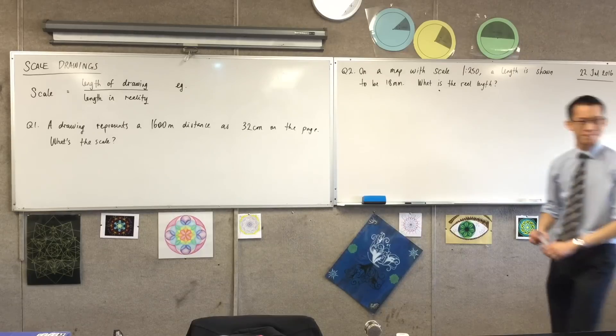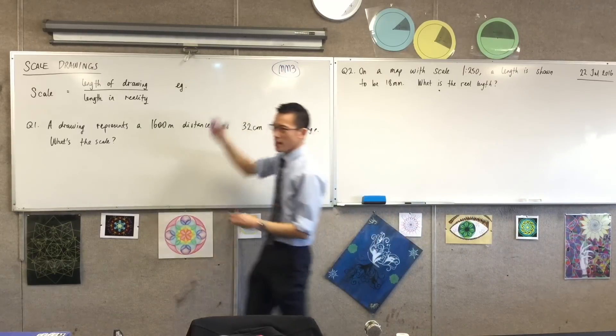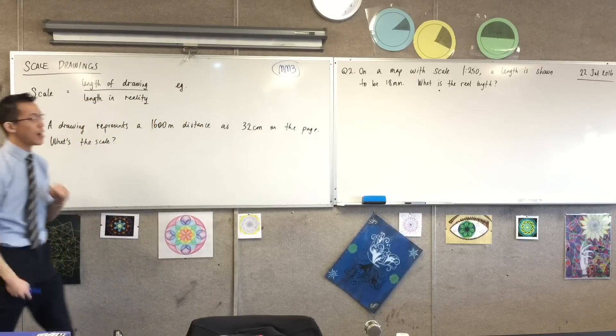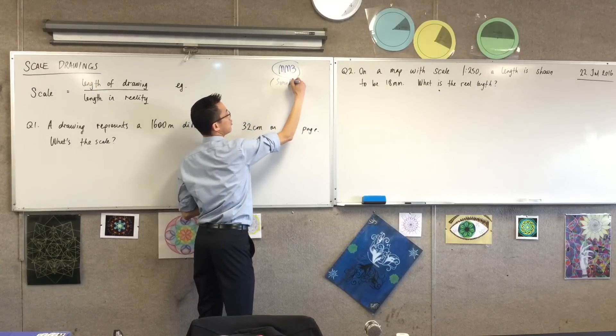We're at MM3 at the moment, right? After looking at units of measurement, and then thinking about perimeter, area, and volume, now we're thinking about similarity. That was the title of this unit, if you recall.